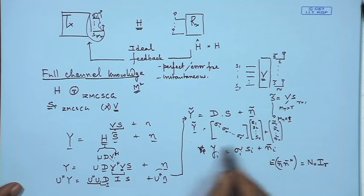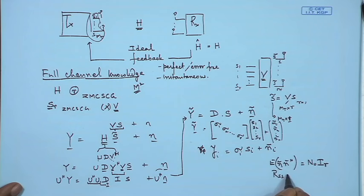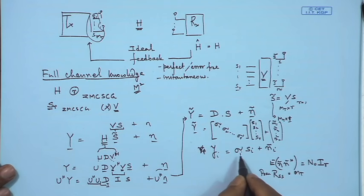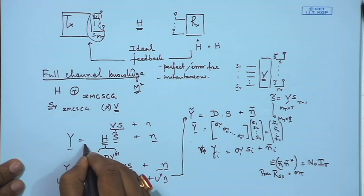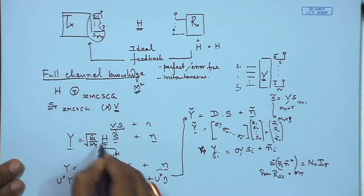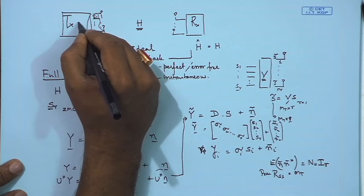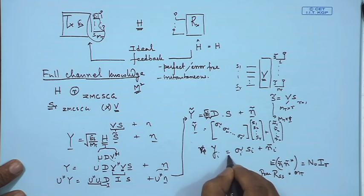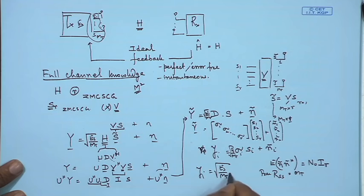We also have the constraint that the trace of R_{ss} equals m_t, meaning total transmit power equals m_t. Including the power normalization factor √(E_s/m_t), we write the received signal expression more clearly as: y_i = √(E_s/m_t) · σ_i · s_i + ñ_i, where y_i is the i-th received signal and s_i is the i-th transmitted signal.